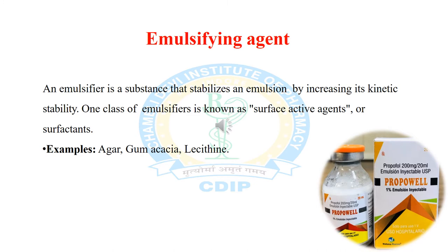Emulsion contains two immiscible liquids — one is oil and another is water. Normally two immiscible liquids cannot be dispersed for a long period, so an emulsifying agent is added to the system. An emulsifier is a substance that stabilizes an emulsion by increasing its kinetic stability. One class of emulsifier is known as surface active agent or surfactant. Emulsifiers form a film around the globules in order to scatter them indefinitely in the continuous phase so that a stable emulsion is formed.